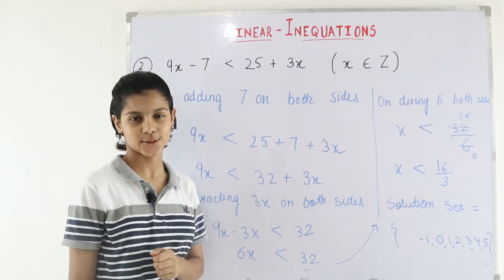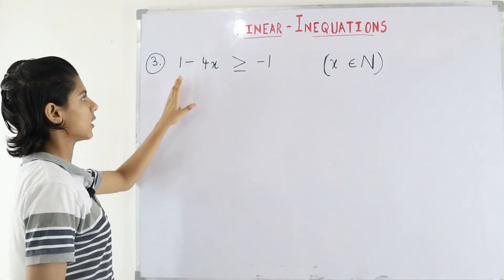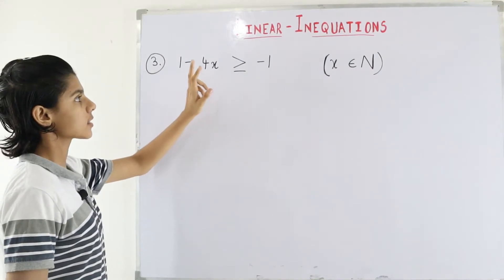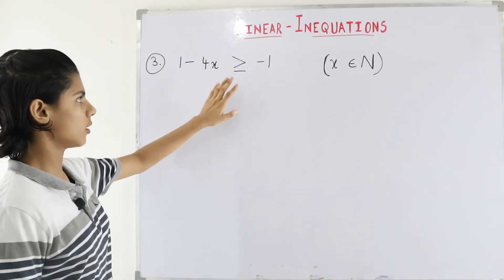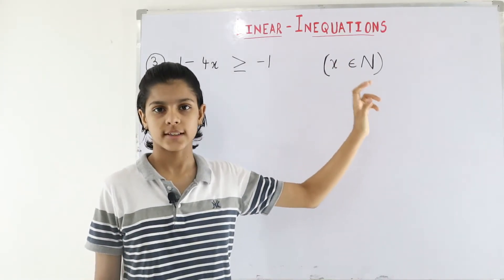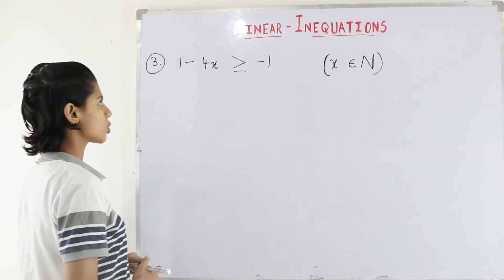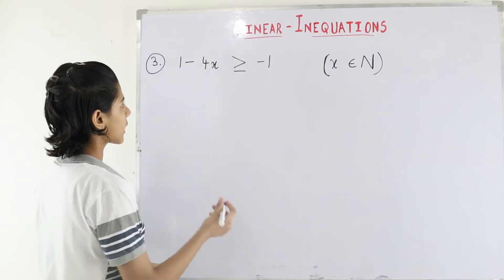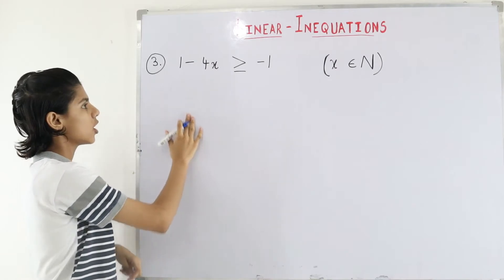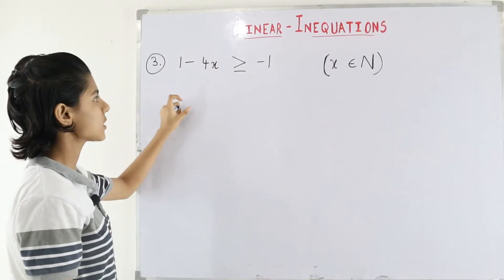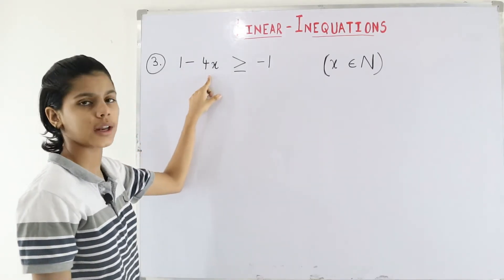Now let's move to the last question: 1 minus 4x is greater than or equal to minus 1, where x belongs to natural numbers. First, since the 1 here is positive, we subtract it from both sides. On subtracting 1 on both sides — because the minus sign belongs to 4x.